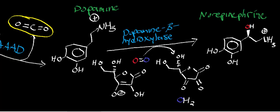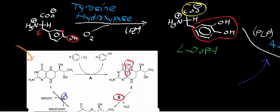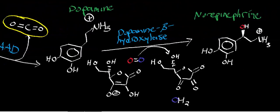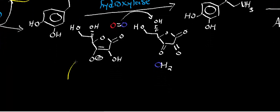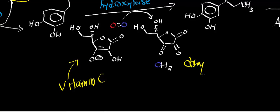Dopamine is going to get consumed by dopamine beta-hydroxylase. This is a very strange hydroxylase — it's not a tetrahydrobiopterin-dependent hydroxylase. It's actually an ascorbate-dependent hydroxylase. This molecule right here is ascorbate, sometimes called ascorbic acid or vitamin C.